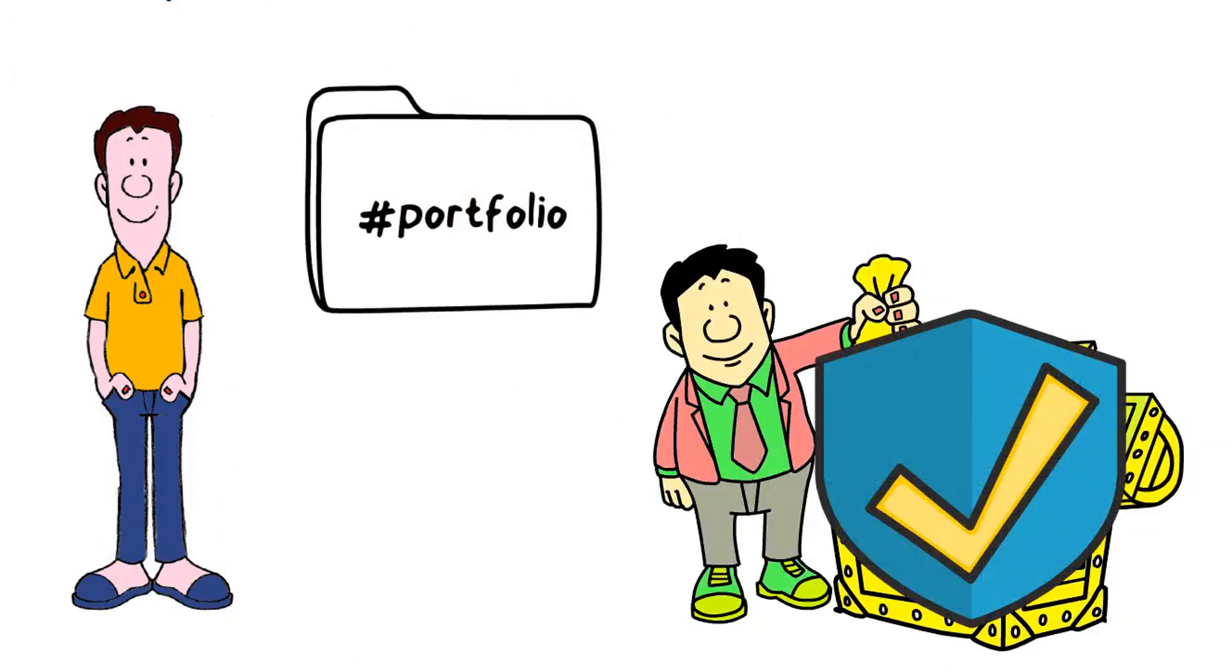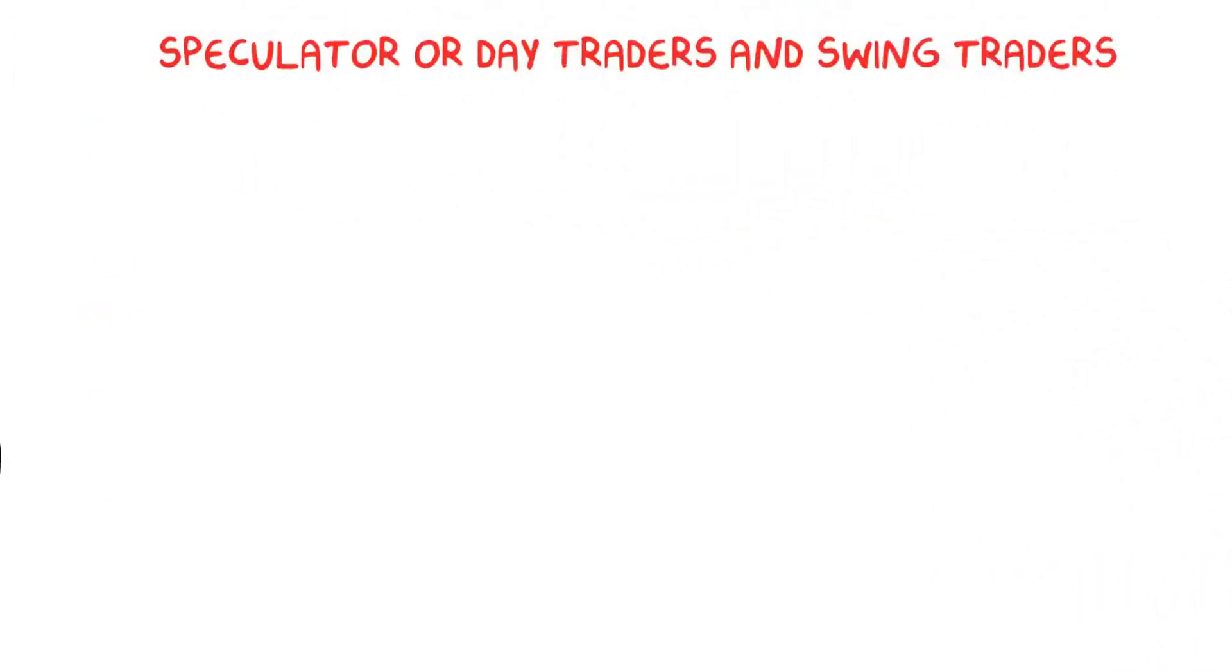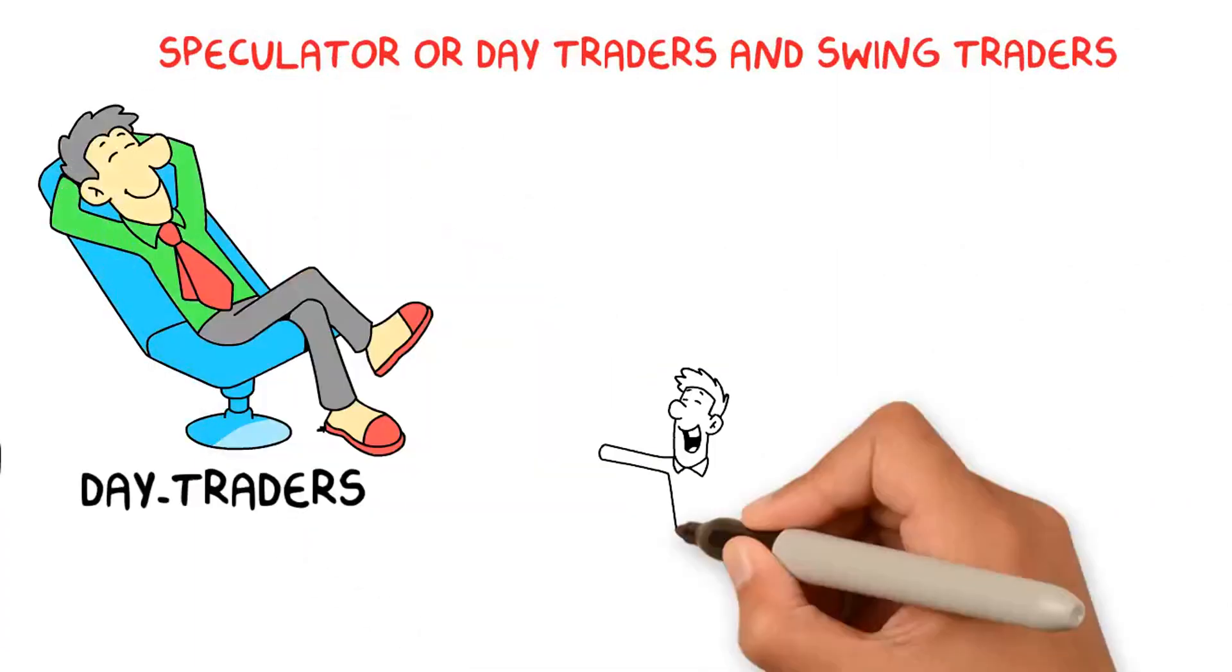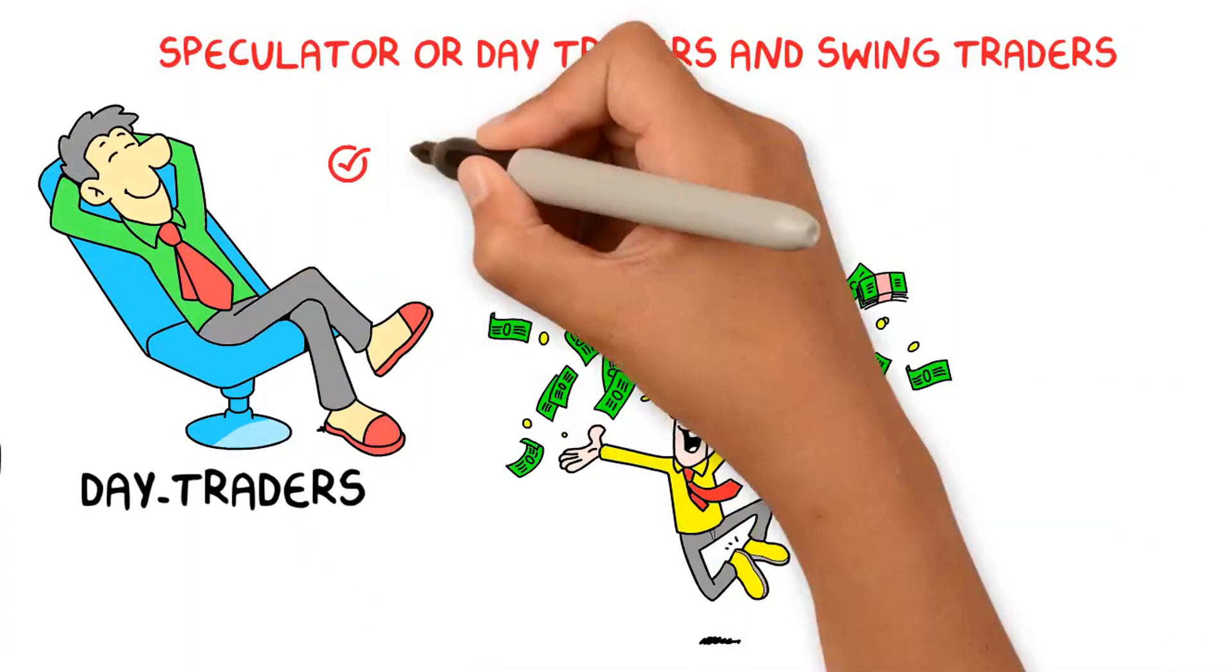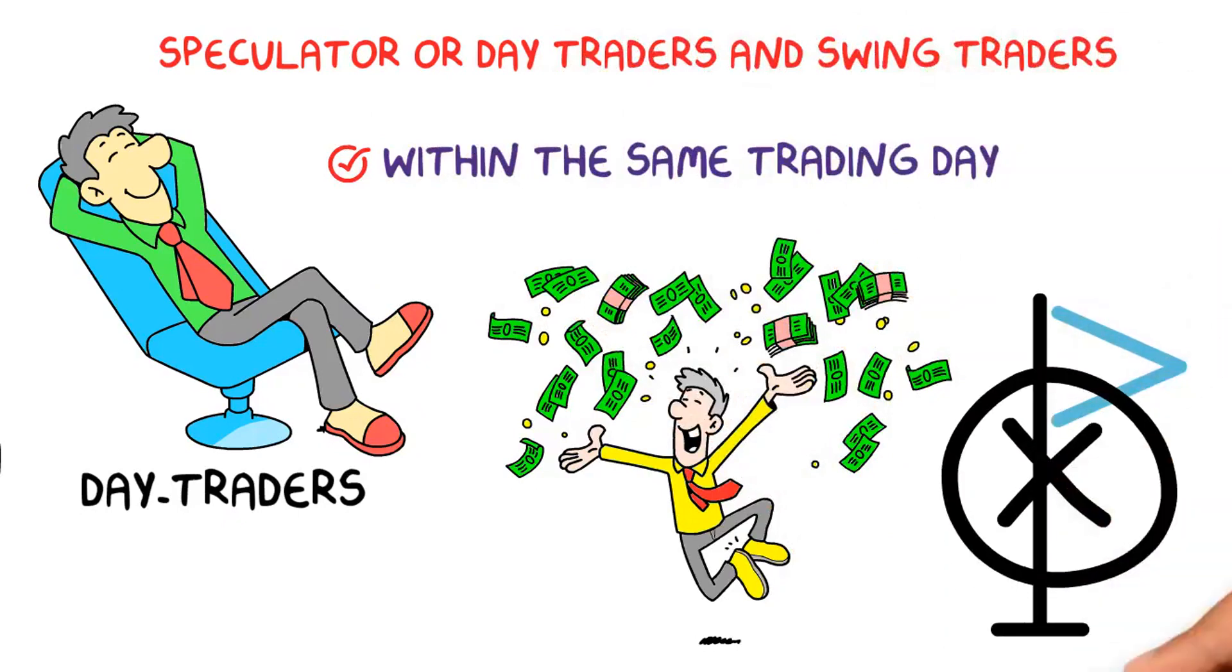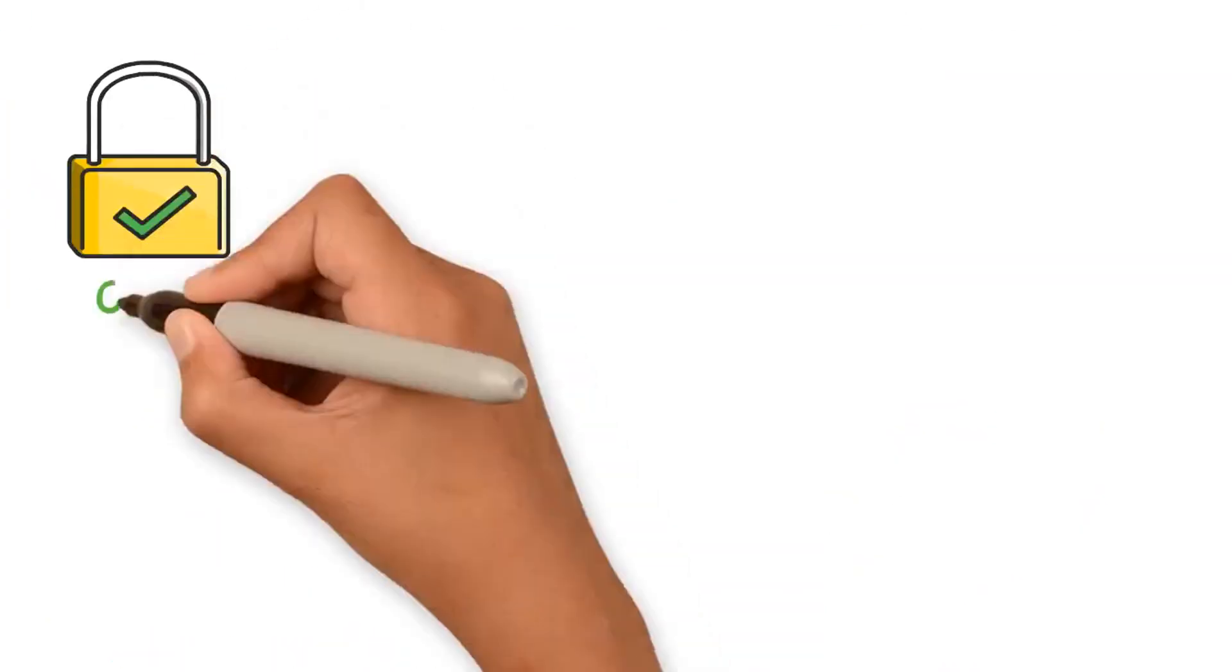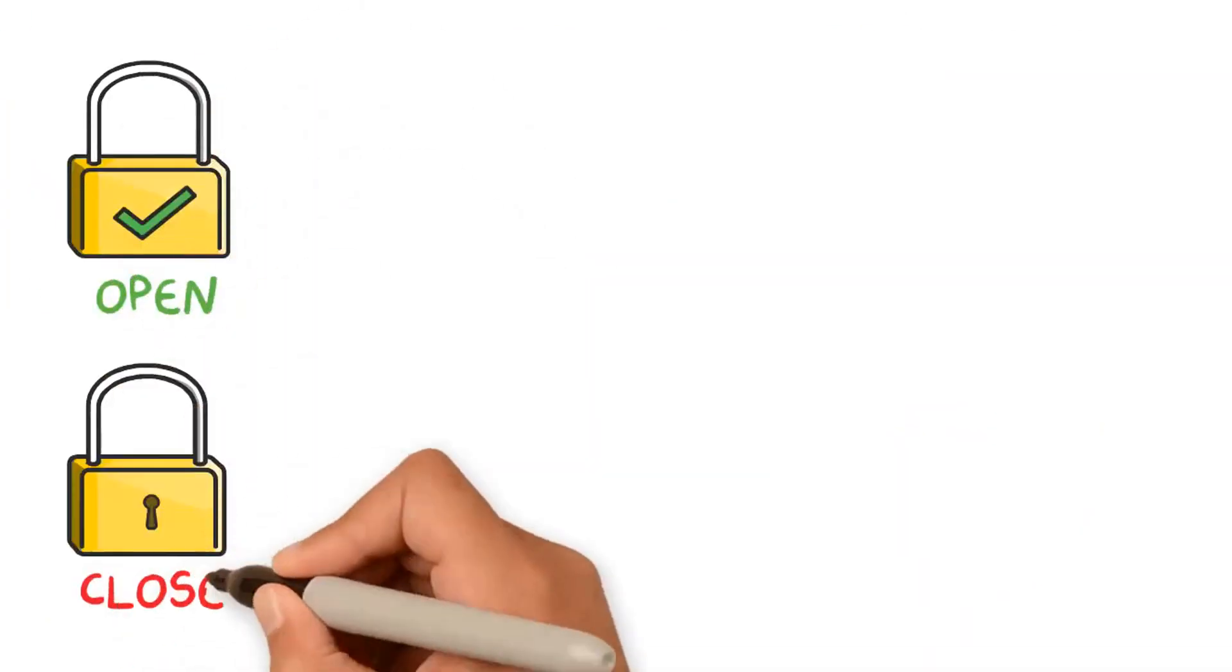The third type of investor are called speculators or day traders and swing traders. Day traders are a type of speculator that buy or sell financial instruments within the same trading day. So day traders usually close all their positions before the market closes to avoid risk and negative price gaps. Day traders usually open or close their positions based on price action, fundamental analysis, technical analysis, and market sentiment.